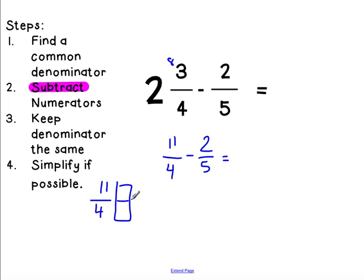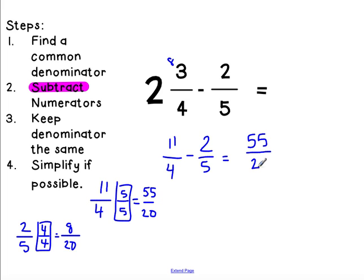So I'm going to do 5 here. 4 times 5 is 20, 11 times 5 is 55. And then I have 2 fifths that I would like to get out of 20 as well for my common denominator. 5 times 4 is 20, 2 times 4 is 8. So I have 55 over 20 minus 8 over 20. I have a common denominator, I can go ahead and subtract. So I have 55 minus 8. I need to borrow. So I have 15 minus 8 is 7, and then I have 4. So I have 47 out of 20.